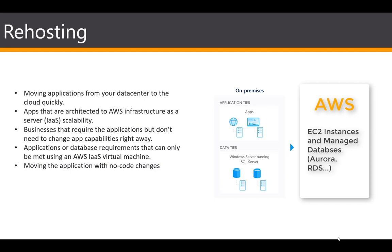Or for apps or databases whose requirements can only be met using AWS virtual machines. For example, if you are employing a new database or a new app that requires a significant hardware upgrade, then re-hosting will be the best option because you can get it done very quickly. And lastly, moving apps without any code changes, which basically means your apps can operate efficiently on the cloud infrastructure and do not need any recoding.